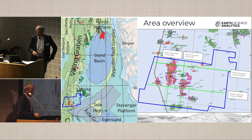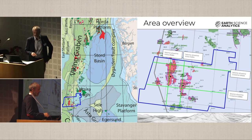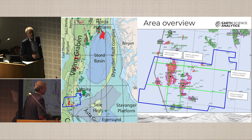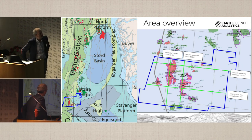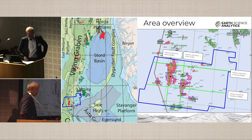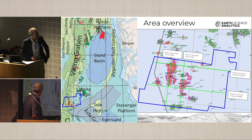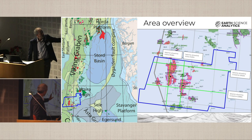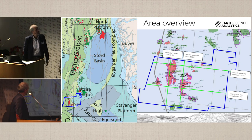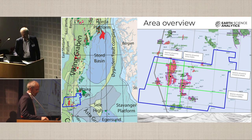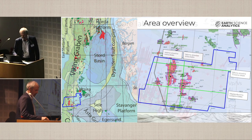Quick overview of the area: the focus area is at the bottom of the Viking Graben — the Sleipner Vest and Sleipner Ost fields. We can see the outline of the survey, which is quite extensive and captures them well. We're focusing on a crossline running north-south right through the Sleipner Vest field, and we have results to show on that later.